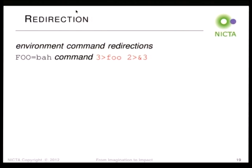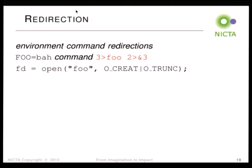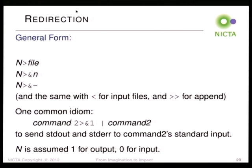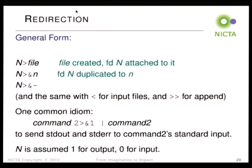Redirections look something like this. '3>foo' says: open the file called foo for writing, truncate it to zero length, and assign file descriptor 3 to it. '2>&3' says: make file descriptor 2 the same as file descriptor 3. So what that actually does in the shell is: open foo with O_CREATE and O_TRUNCATE — zeroing the length of that file — then dup2 of file descriptor 2 onto file descriptor 3, then close the file descriptor. The general form: for output, n is assumed to be 1 if you leave it off; for input, n is assumed to be 0. '>>' appends rather than truncating. '>&' duplicates, and '>&-' closes the file descriptor.